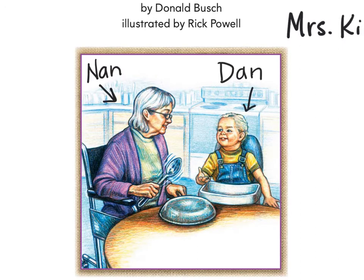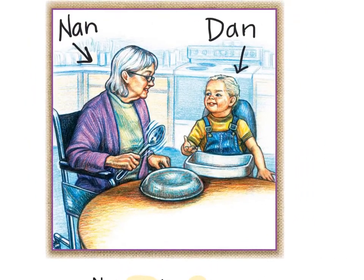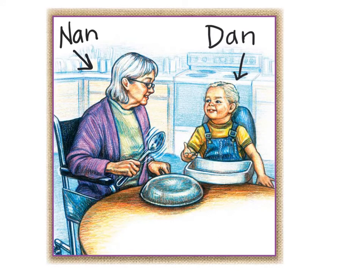Let's read that sentence at the bottom. Fingers ready, highlighter down and fingers ready. Ready — read: Nan can tap a pan. Oh, and what punctuation do you see? A period. Good. Go ahead and circle your period. Now up here Nan looks like maybe she's the grandma, and Dan is the little boy. What's she showing Dan how to do? To tap on the pan. Sometimes little kids or babies like to play pretend drums.